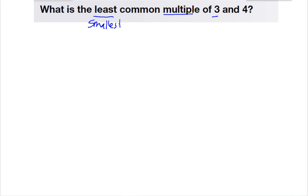Now we're looking for the smallest number that goes into both 3 and 4 because multiples go on and on forever. You can always keep multiplying. So we're looking for the smallest number that both 3 and 4 go into. So let's take a look. Let's just write down some of the multiples of 3.